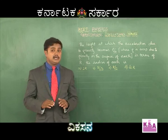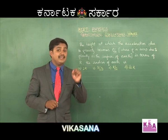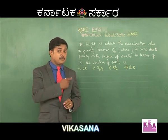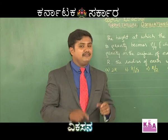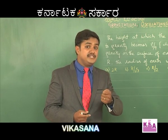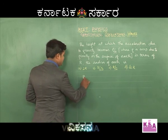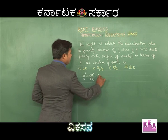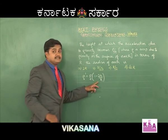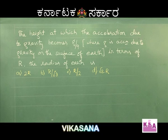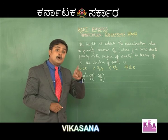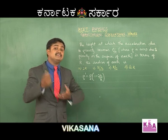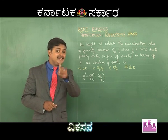Dear students, as we go above the surface of earth, the value of g decreases. In this problem we need to find at which height g reduces to g/9. We have the approximate expression G-dash = G(1 − 2H/R), but this formula is valid only for small heights. Here, since g reduces to g/9, it almost reduces by 90%, so the height cannot be small. You cannot use this approximate formula here.